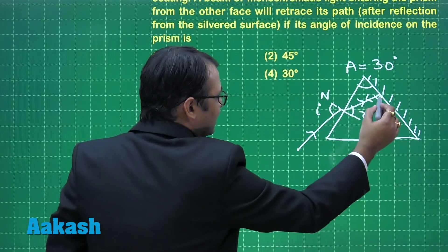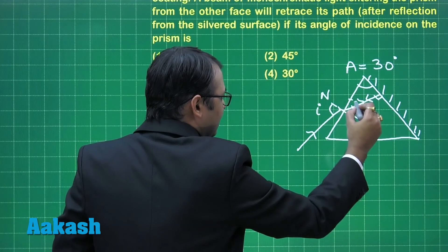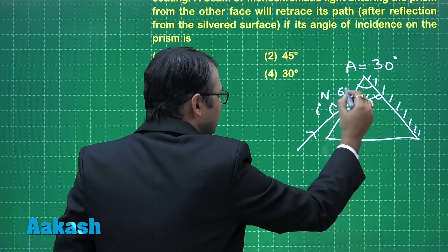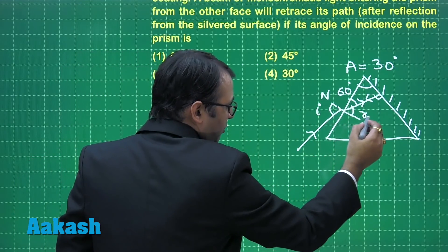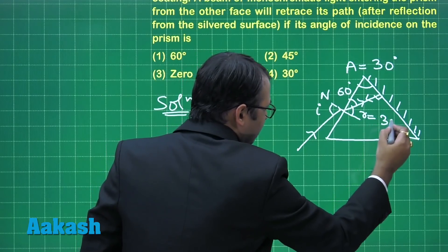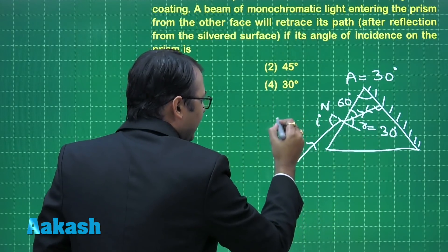Let's see. So if this is 90, this is 30, this angle would be what? 60 degrees. So if this is 60, since it is normal, what would r be? 30 degrees.